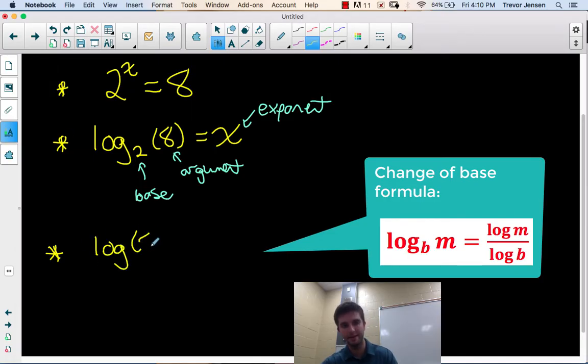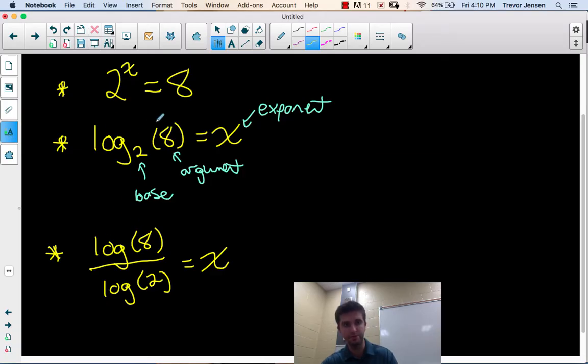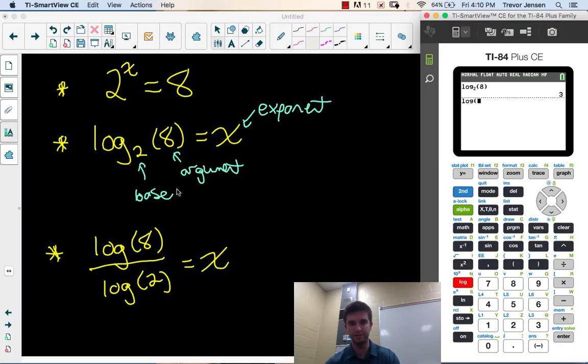Log base 10 of 8, and if it's base 10 we don't have to write the base, divided by log base 10 of 2. That's the change of base formula. So I've now written these both with base 10. If you don't see a base, we assume it's 10. This would be used to solve this expression. So log base 2 of 8 is the same as log 8 over log 2, and I'll prove that to you here.